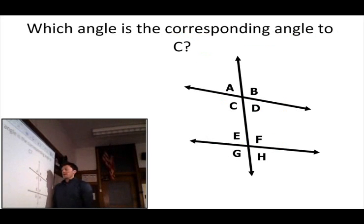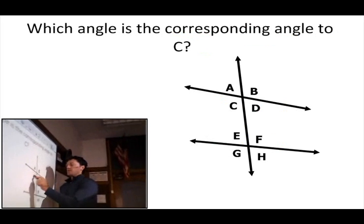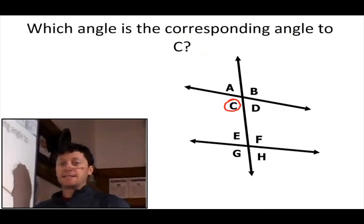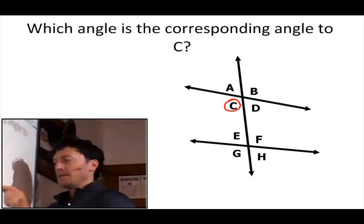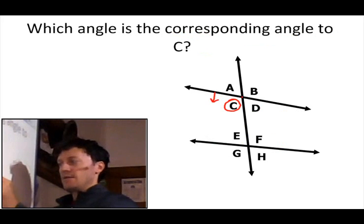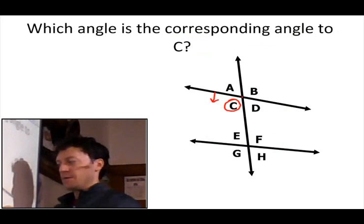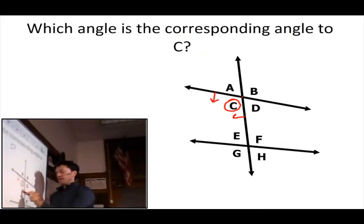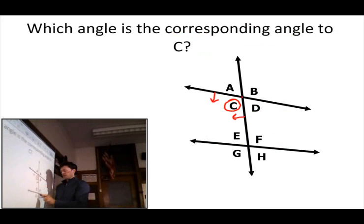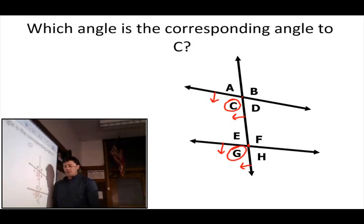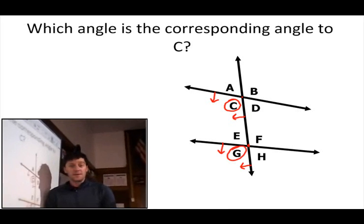And for corresponding angles — which angle corresponds to C? To get to C, I went below the line being cut and to the left of the transversal. Going to the second intersection, below the line and to the left of the transversal, gives angle G. So G corresponds to C.